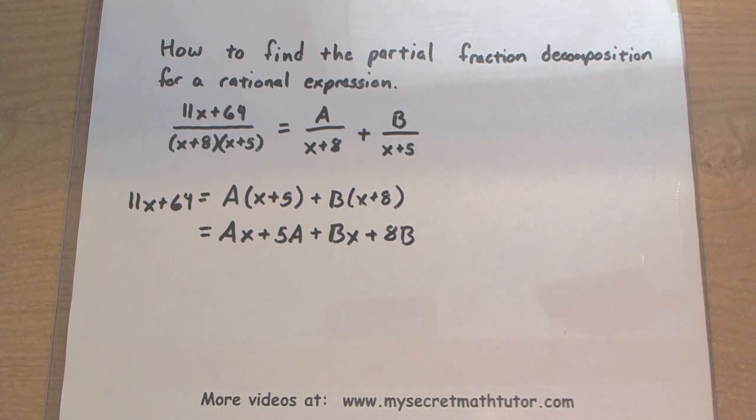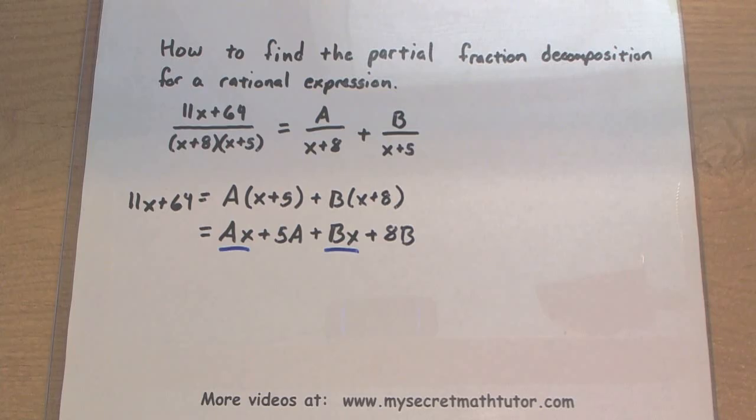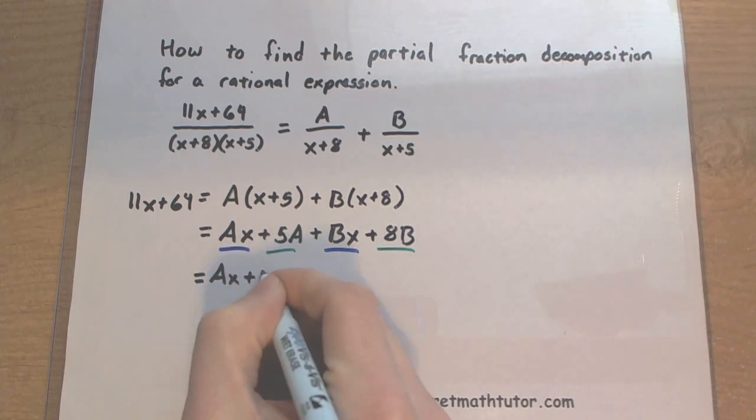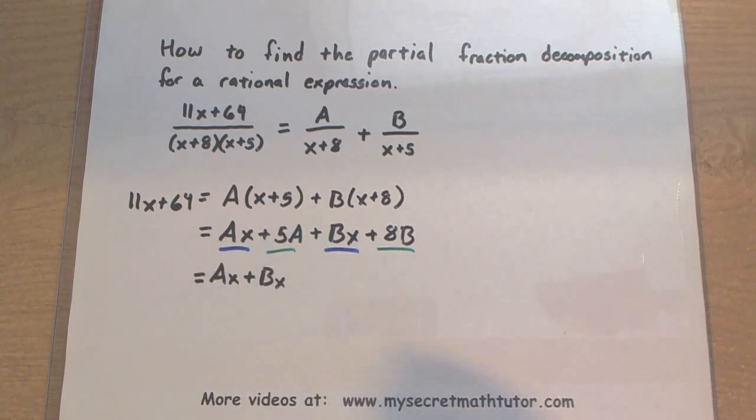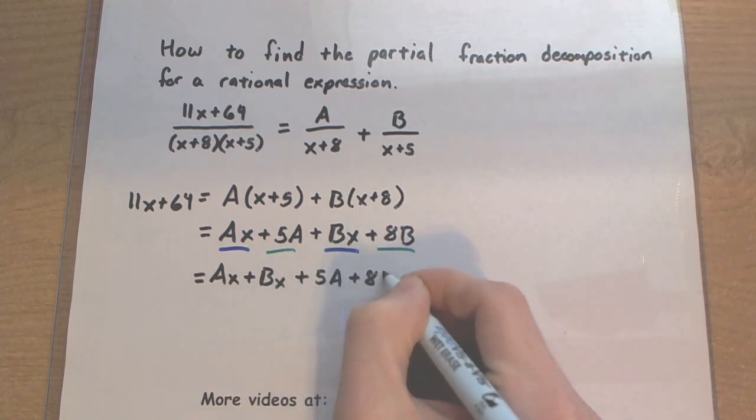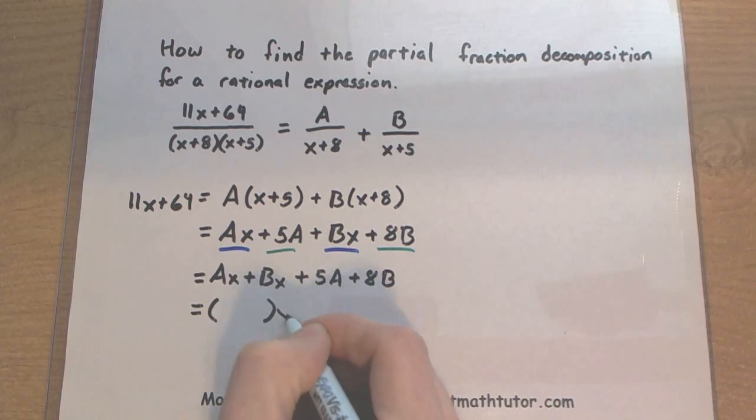Now notice how some of our terms have an x and some of them do not have an x, like the 5A and the 8B. Let's start grouping together the terms that have an x and the terms that do not have an x.